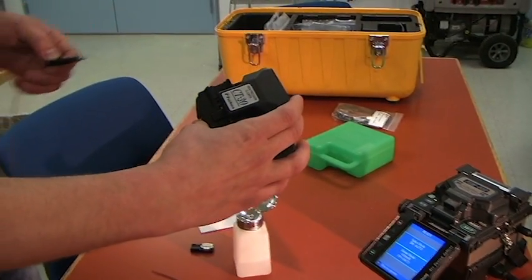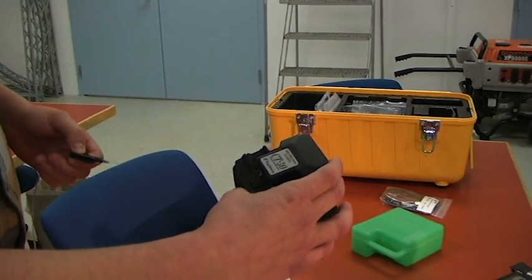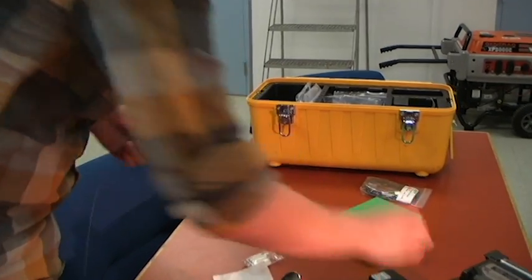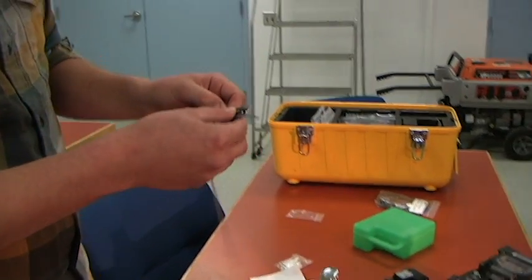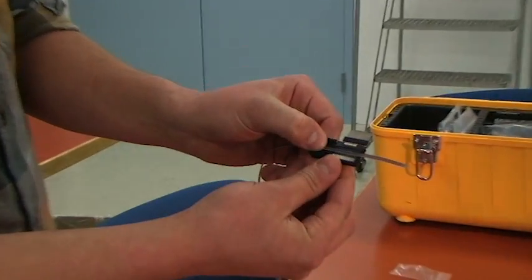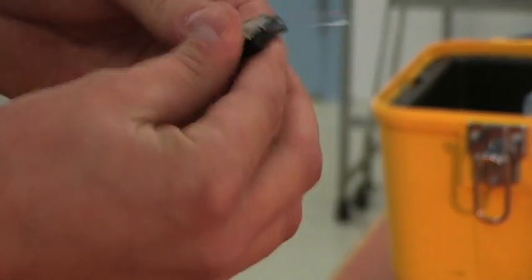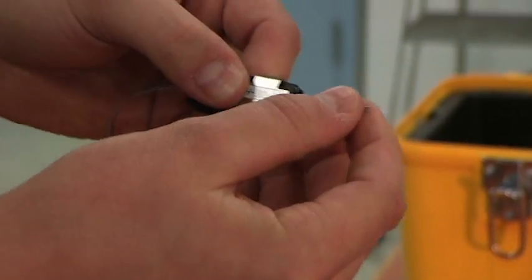CT30 cleaver which we will use with the fiber holders to cleave the fiber. We'll begin by setting our ribbon fiber in the fiber holder. We want to leave about an inch and a half hanging off the end.